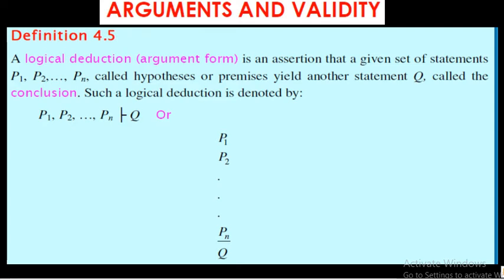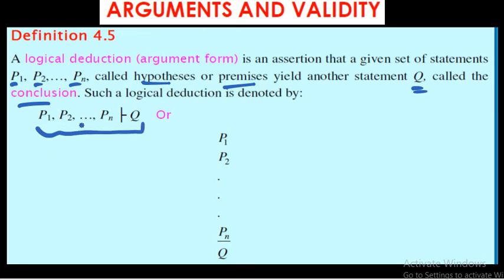In this video we will be learning about arguments and validity. So far we have been investigating truth values of logical statements or compound propositions. A logical argument form is an assertion that a given set of statements — p1, p2, through pn — called hypotheses or premises, gives us another statement q called the conclusion.